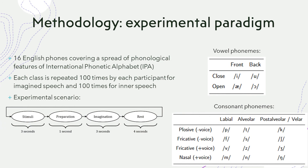As shown in the two tables on the right, 16 prompts were selected for the experimental paradigm, which cover a wide and balanced spread of phonological features across the international phonetic alphabet. The experiment consisted of each participant repeating each prompt 100 times for both speech modalities. Each trial begins with a stimulus state where the subject is tasked with a phoneme, followed by a brief preparation state and a three-second imagination state where the subject repeats the prompt five times. Lastly, four seconds are given for the subject to refresh their mind.